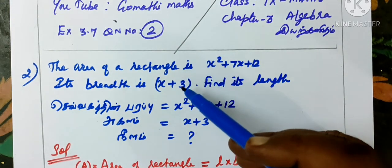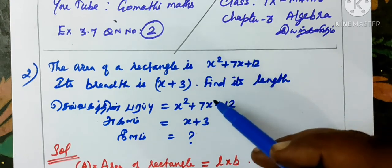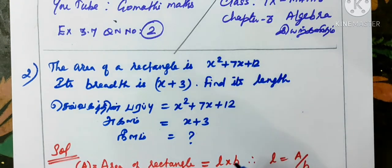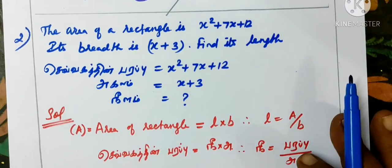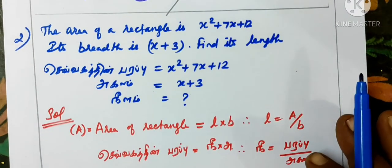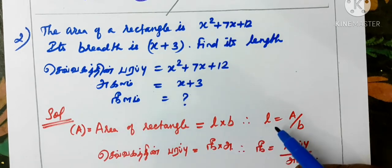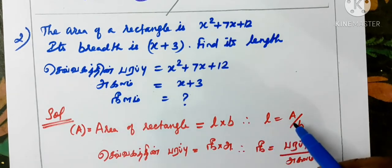The area of the rectangle is x square plus 7x plus 12. Breadth is given. Find the length. Breadth is given as x plus 3, find the length. Area of the rectangle formula: L into B, so length equals area by breadth.